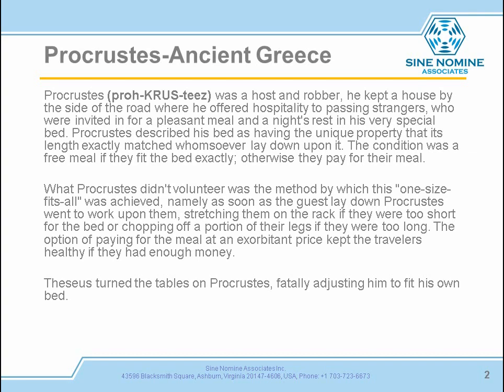In life and in the design world, we have choices — we can either design something or we can adapt to make something else work. If we go back to ancient Greece, a great example of this is Procrustes. He kept a house by the side of the road, offered hospitality to passing strangers, invited them in, offered them a pleasant meal, and told them about his special bed that would fit anybody that laid down upon it. He told them their meal was free if they fit the bed exactly, otherwise they would have to pay for it. What he didn't volunteer was the method that the bed worked by — if you were too short, Procrustes would put you on the rack and stretch you until you fit, or if your legs were too long, they would chop off a portion of your legs. The option was to pay for the meal at a very high price.